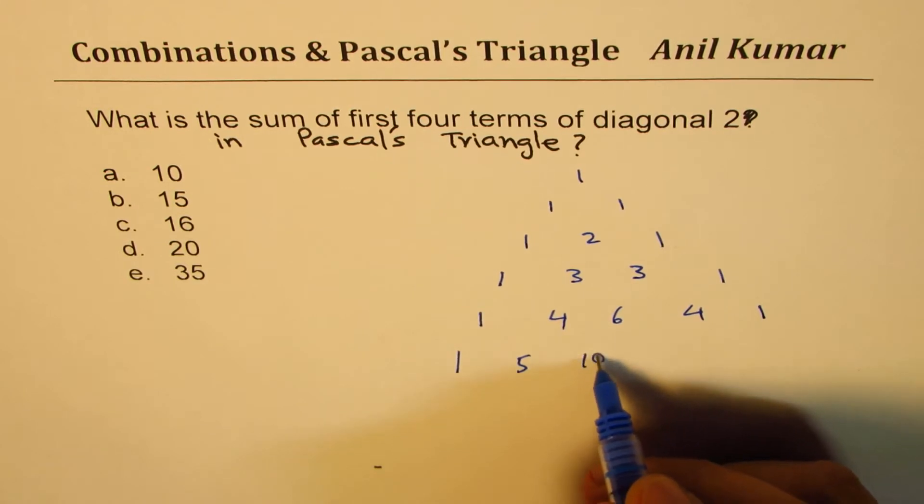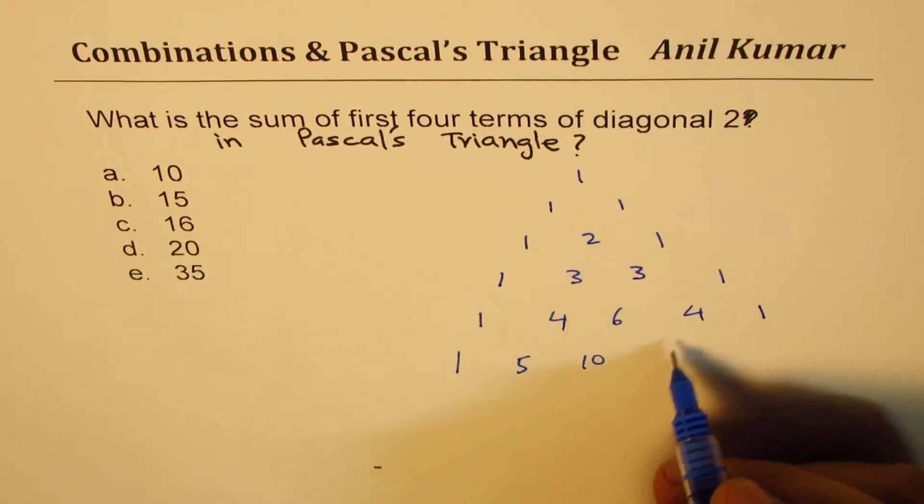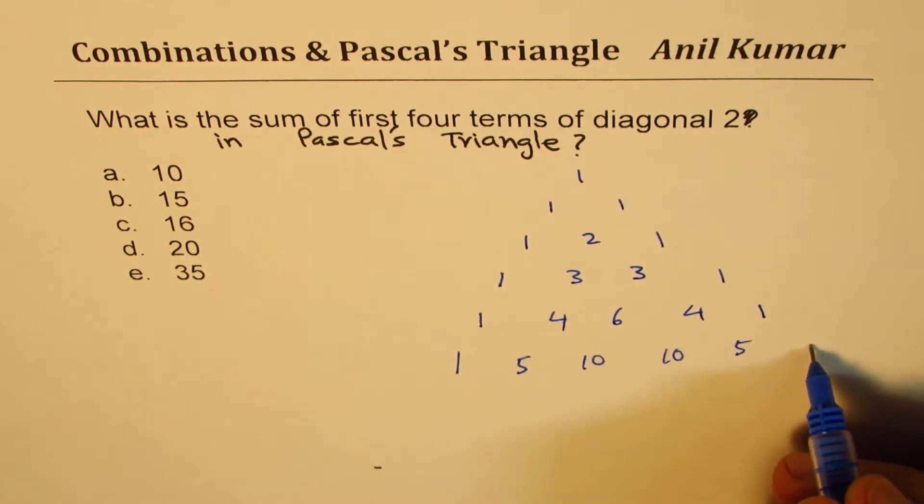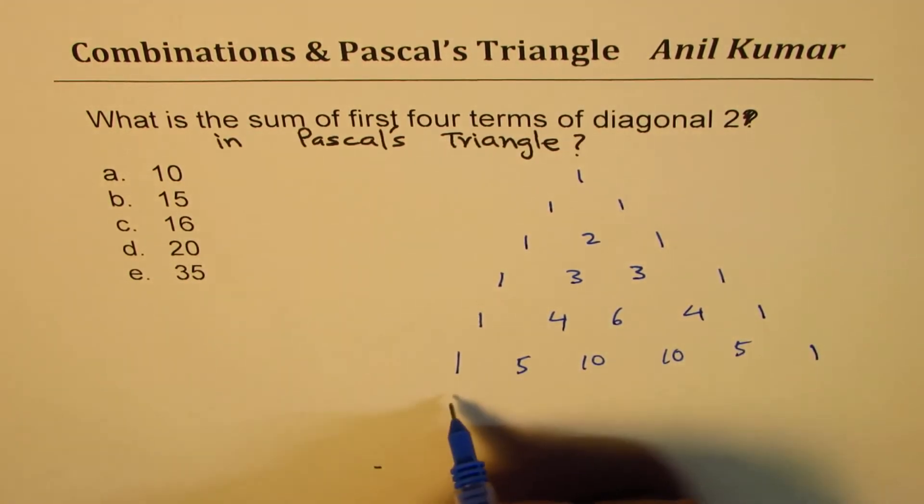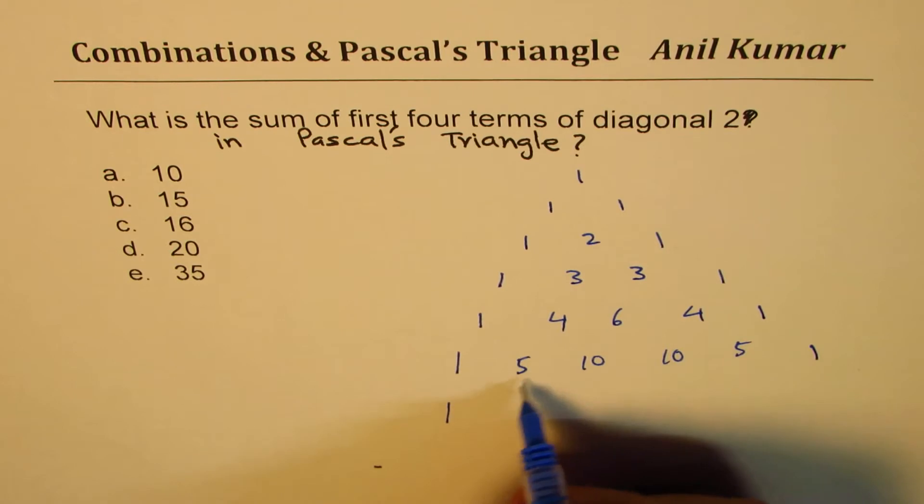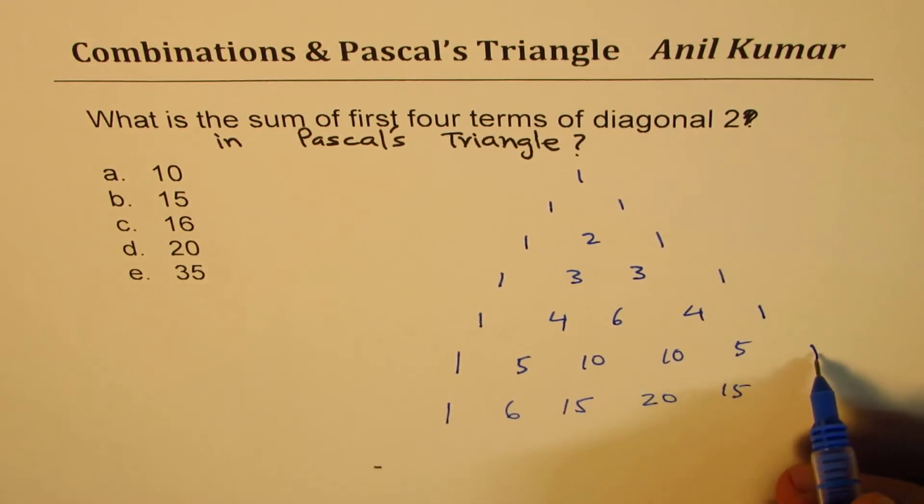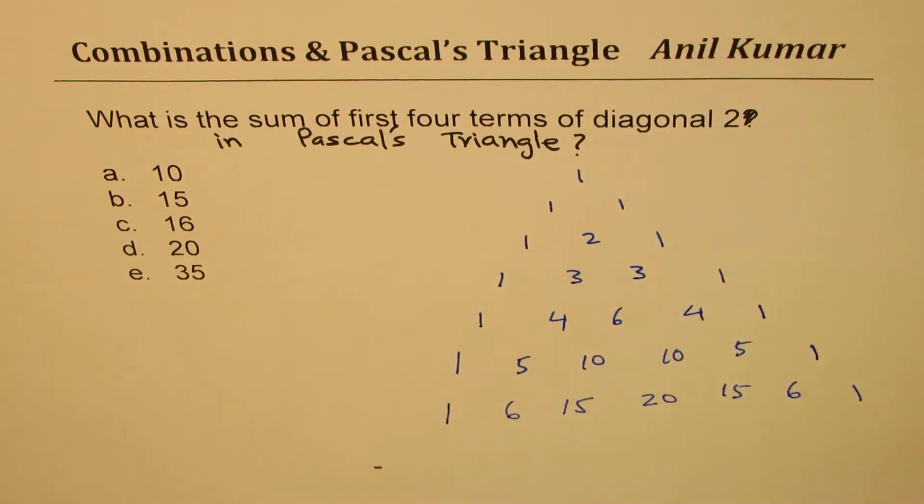And then this diagonal which is also ten, and then this diagonal is five, and of course one. Let me go one more step here: one, and then we have five plus one, six; ten plus five, fifteen; twenty; five, fifteen; and this is five plus one, six. Okay, and then again one. Okay, let's stop here.